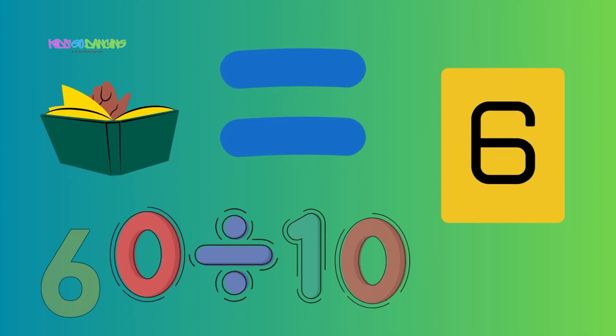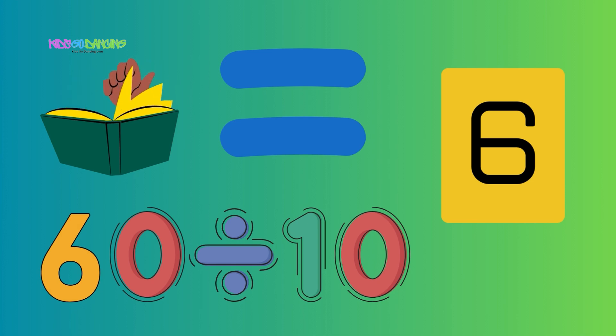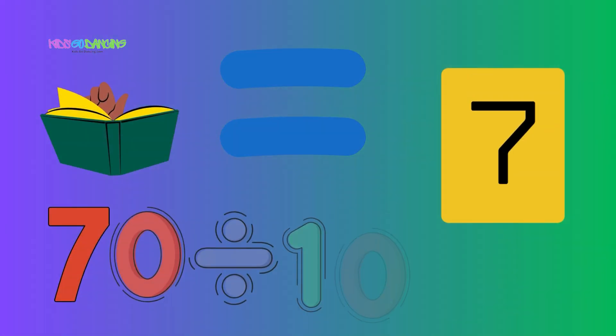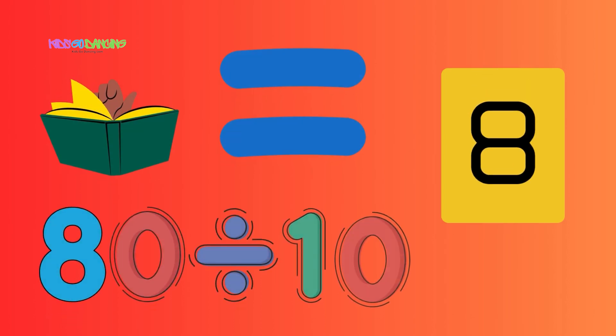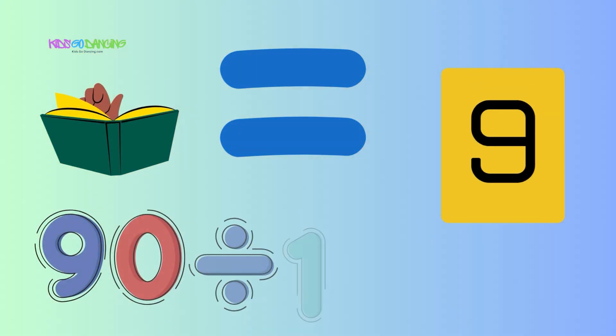60 divided by 10 is 6. Sharing 10s is a simple trick. 70 divided by 10 is 7. Counting groups feels like heaven. 80 divided by 10 is 8. Learning math is really great. 90 divided by 10 is 9.